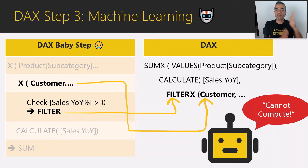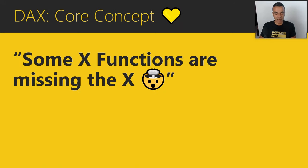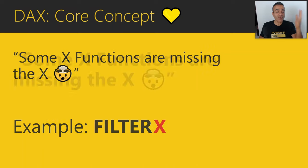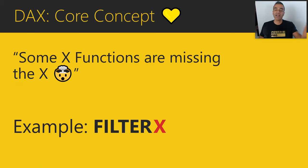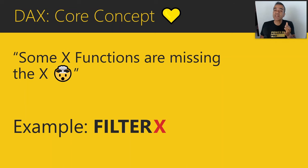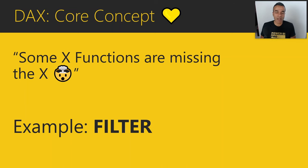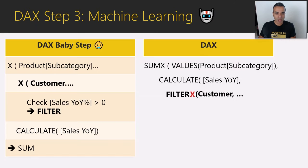Another core concept: some X functions are actually missing the X. The most famous is FILTER — there's no X in it, but it is an X function, an iterator. It works just the same as SUMX, MINX, MAXX, and their buddies. Every time you see FILTER, think FILTERX — because it is an iterator. But alas, the X is missing, so you just have to remember that core concept. We had it written as FILTERX, but we're going to drop the X so Power BI is happy.